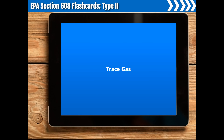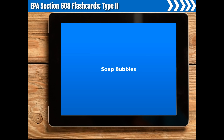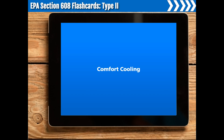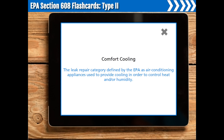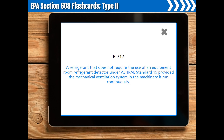Trace gas. To help locate a leak, the use of a trace gas becomes necessary. Nitrogen with a trace amount of the system's design refrigerant should be used. Soap bubbles are best used to pinpoint refrigerant leaks. Comfort cooling. The leak repair category defined by the EPA is air conditioning appliances used to provide cooling in order to control heat and/or humidity. R717. R717 is a refrigerant that does not require the use of an equipment room refrigerant detector under ASHRAE Standard 15, provided the mechanical ventilation system in the machinery is run continuously.